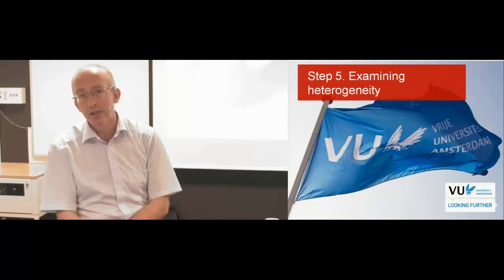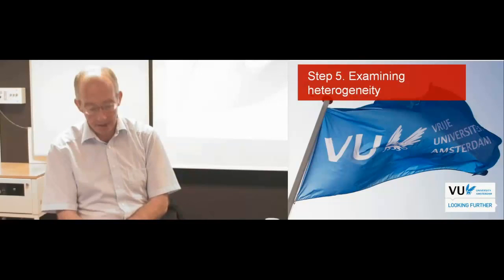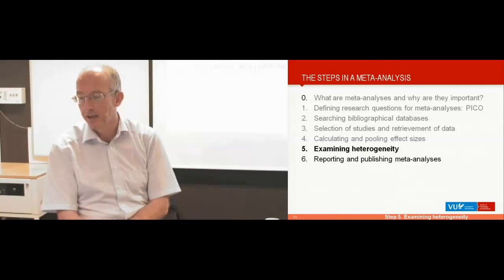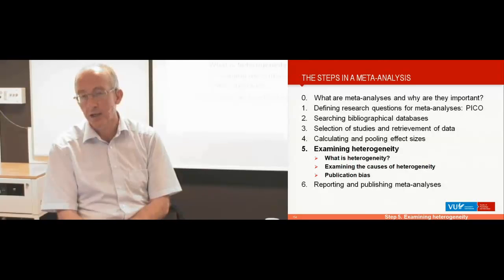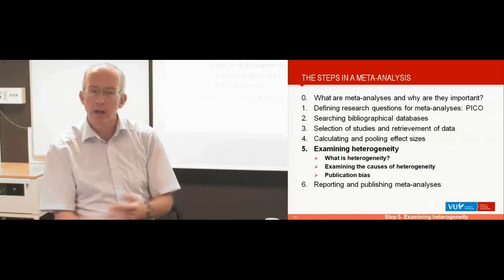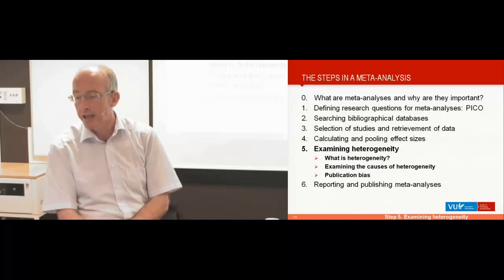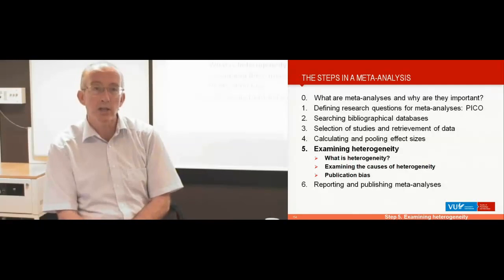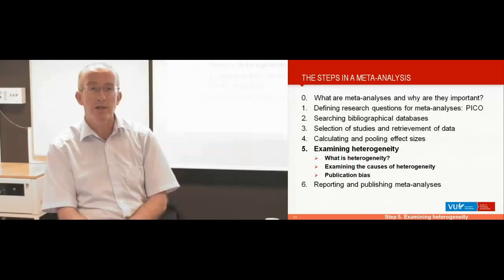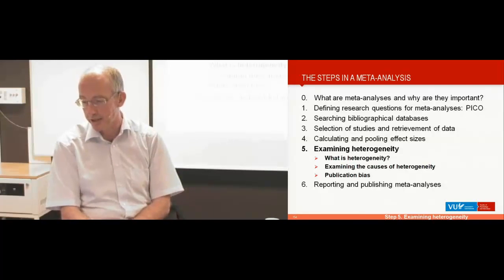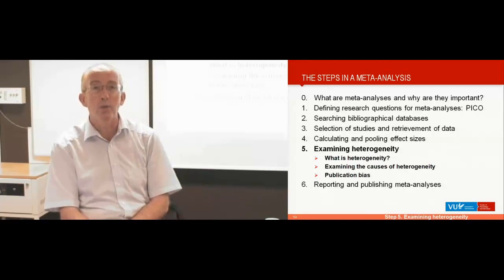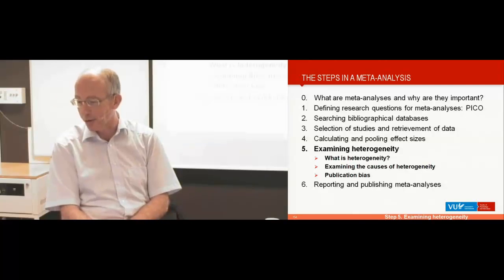The next step in this course, in doing meta-analysis, is that you have to examine heterogeneity. I will first explain what heterogeneity is, then say something about how you can examine possible causes of heterogeneity, and then I will say something about publication bias. Publication bias is not directly related to heterogeneity, but I will talk about it here.